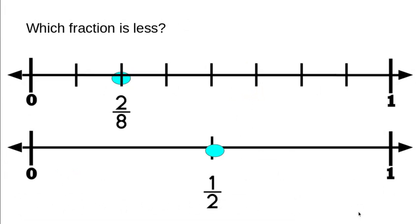We have a number line broken up into eighths and one broken up into halves. The first number line shows two eighths and the second shows one half. This question asks which fraction is less — which one is closer to zero on the number line. If you said two eighths, you are correct. Two eighths is less than one half.